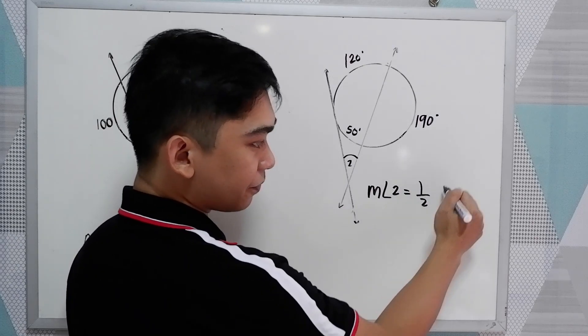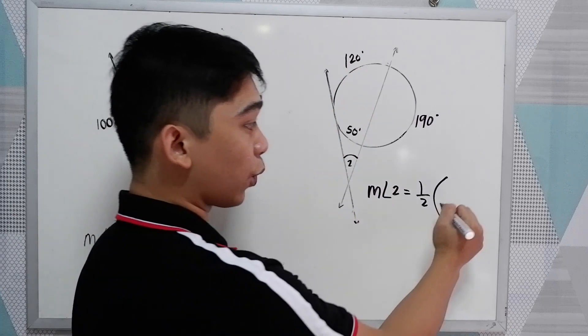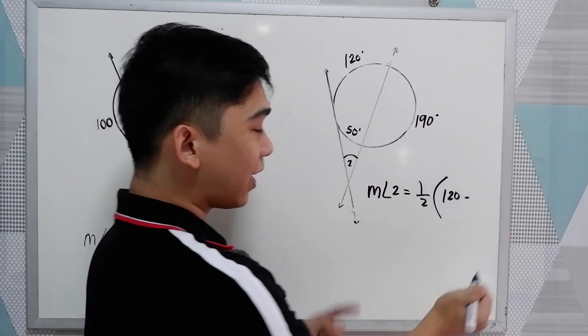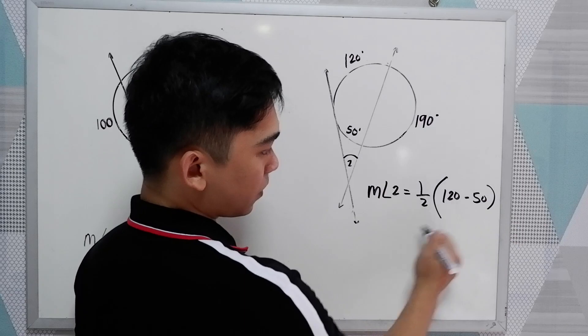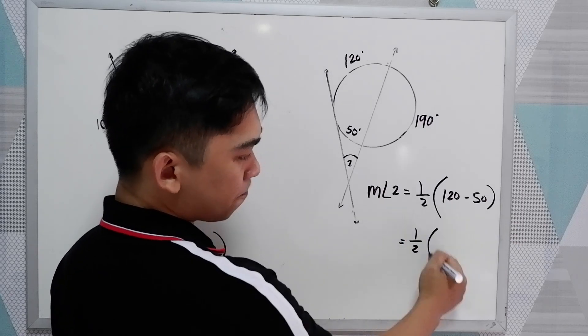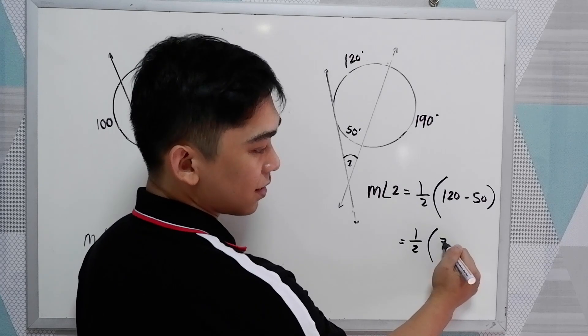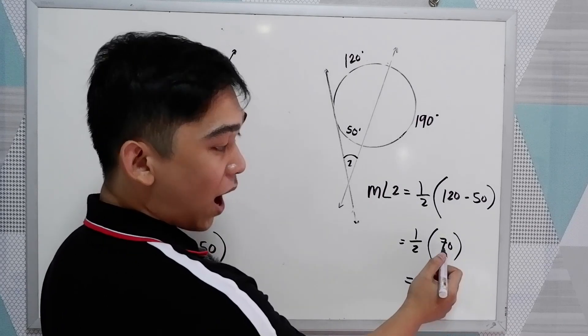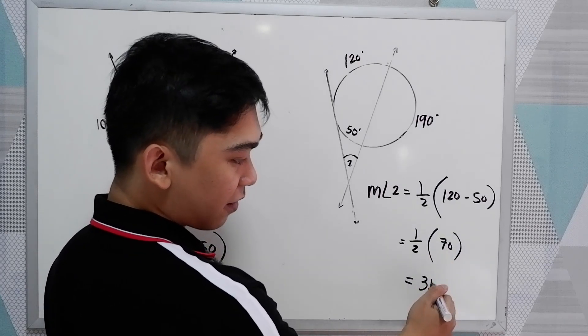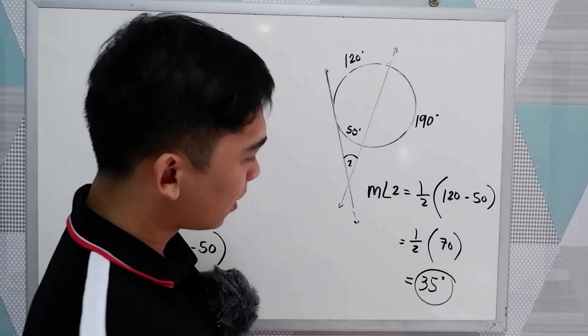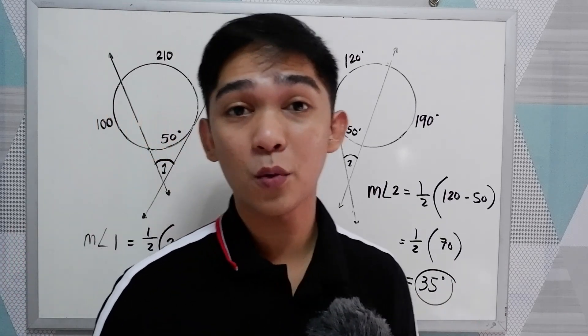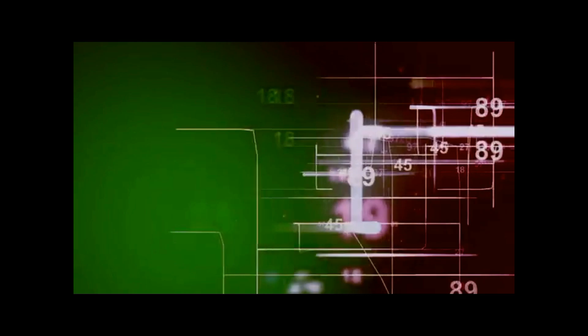That is one-half of 120 minus 50. So one-half of 120 minus 50, that is 70. Now half of 70 is 35 degrees. So that's the application of our theorem number 5. Thank you.